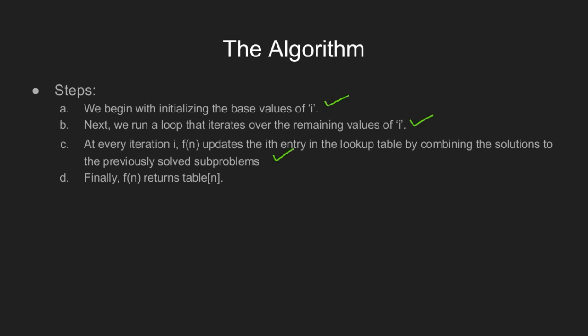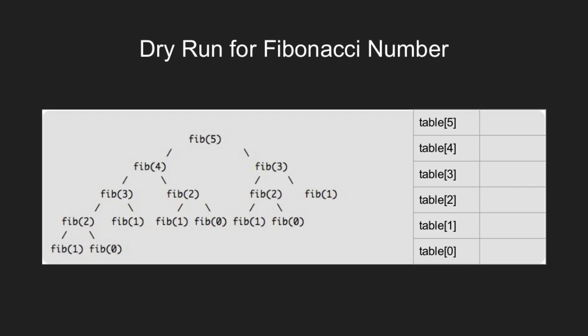After the loop ends, we return the value table[n], as simple as that. Let's see how tabulation will work for our Fibonacci number problem.